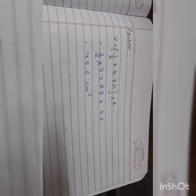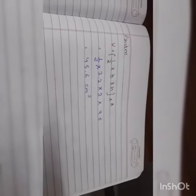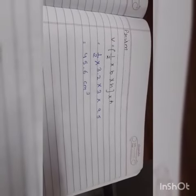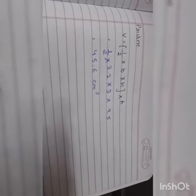And at the last, we will find the volume of prism, which is half into base into height multiplied by height. And after substituting the values, the volume of prism is 45.6 cm³.